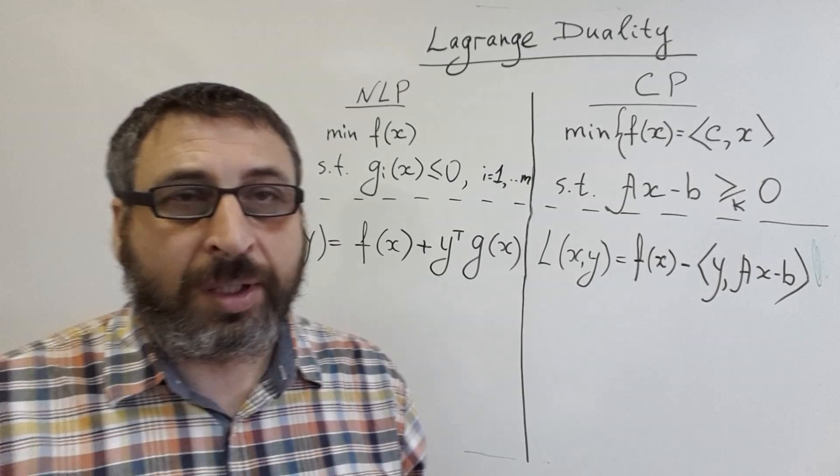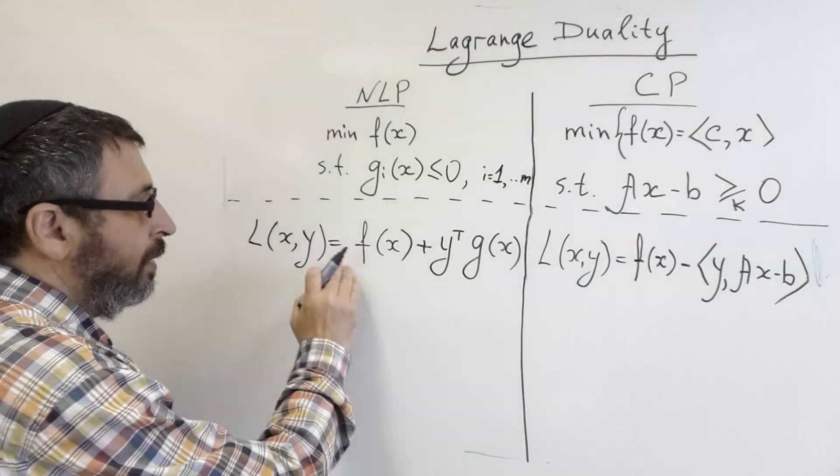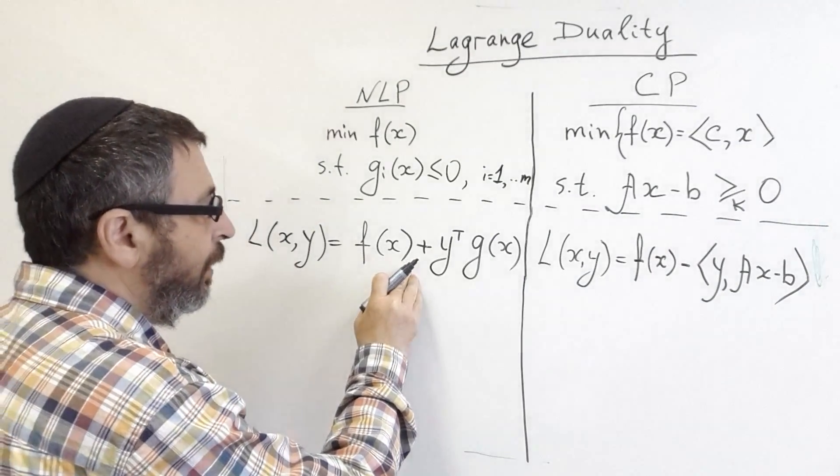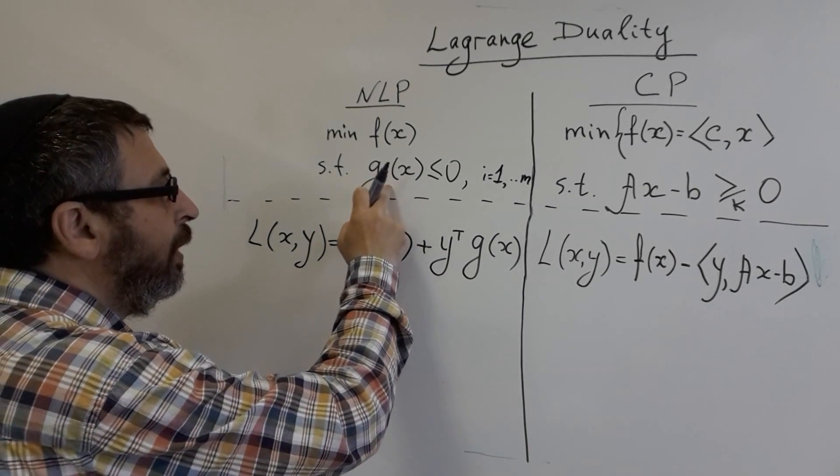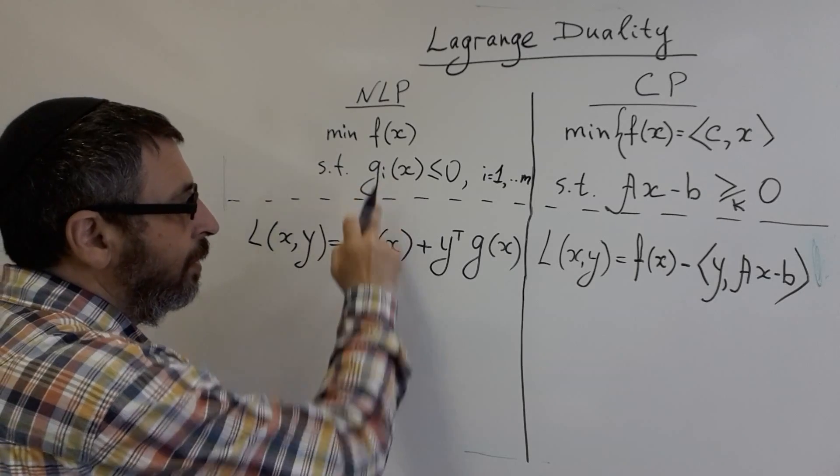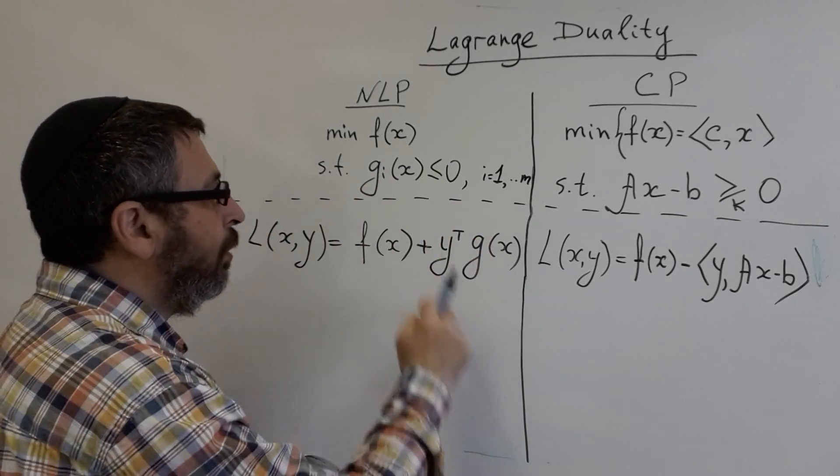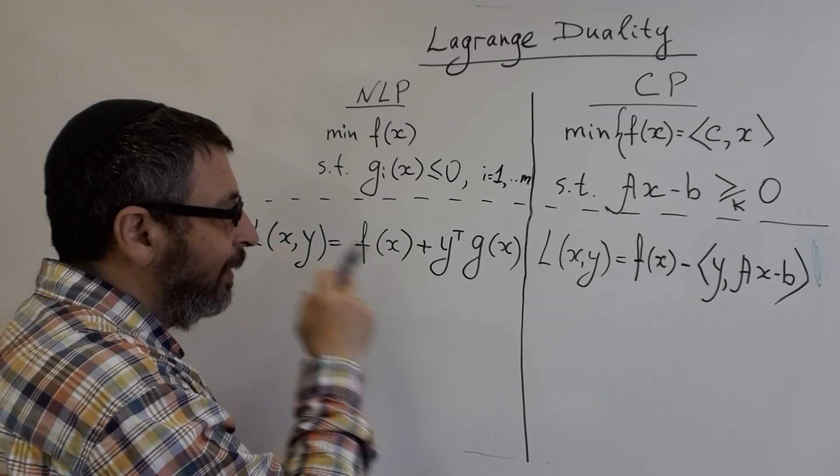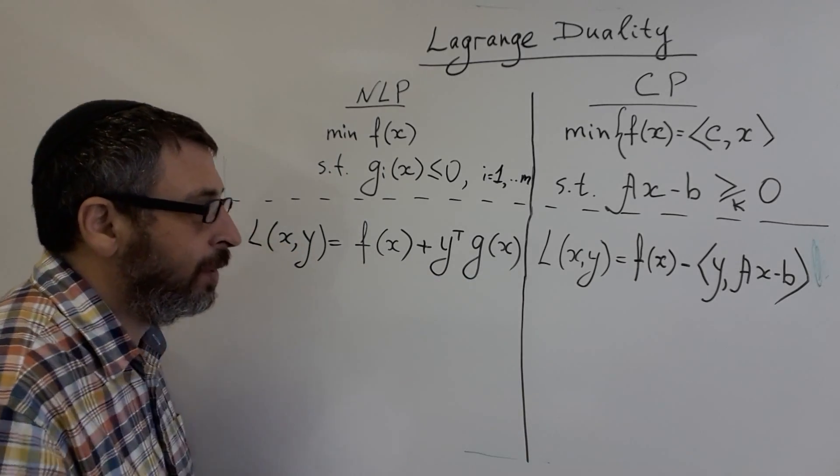In nonlinear programming, the Lagrangian is the sum of objective functions plus Lagrange multipliers multiplied by constraints. In vector form, if we take all constraints as a vector function, it will look like Y transpose G.